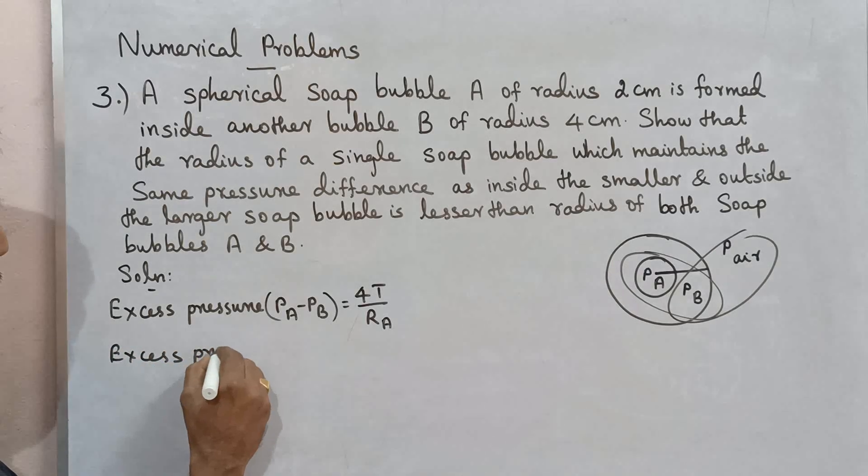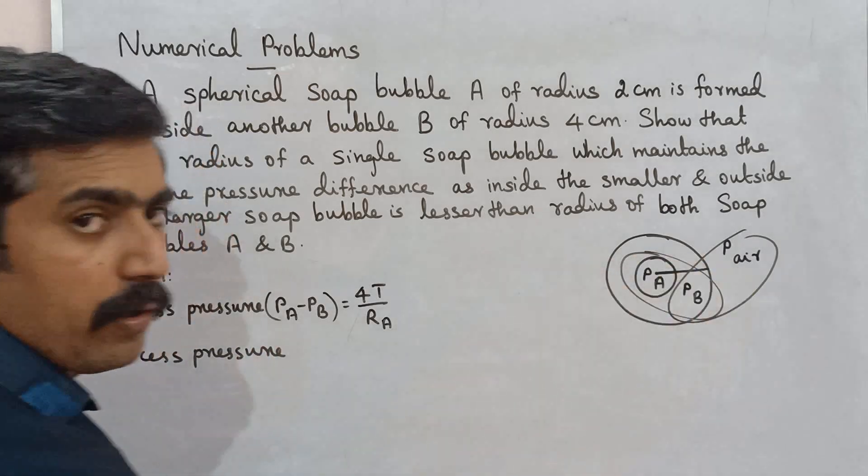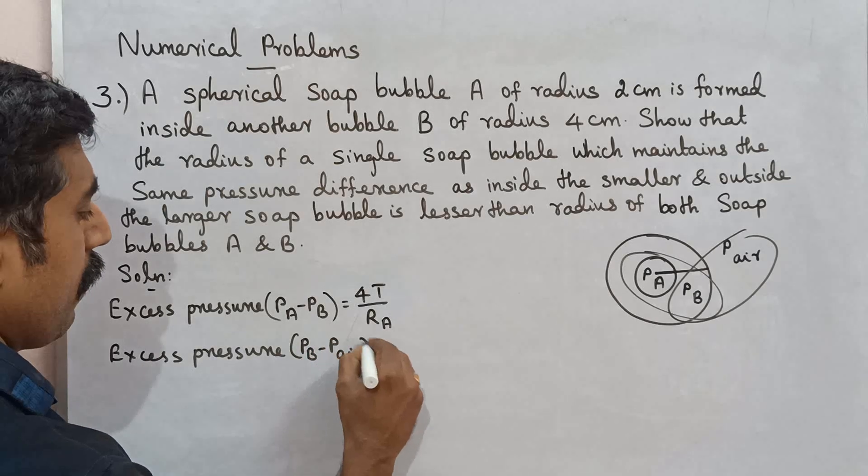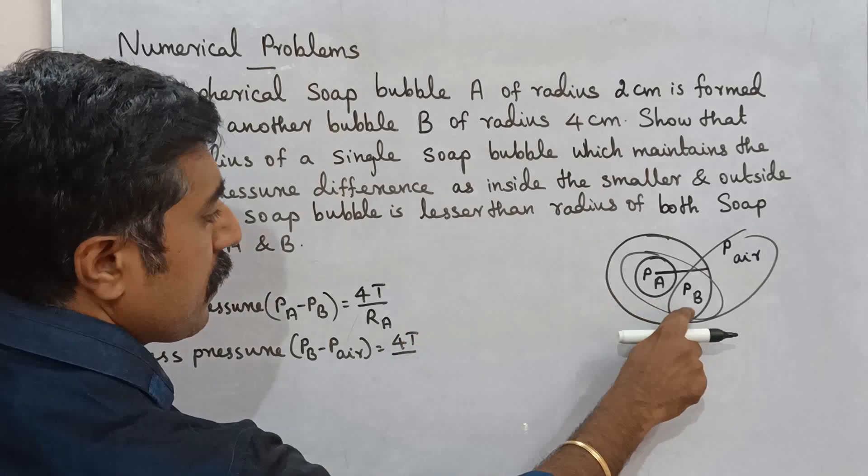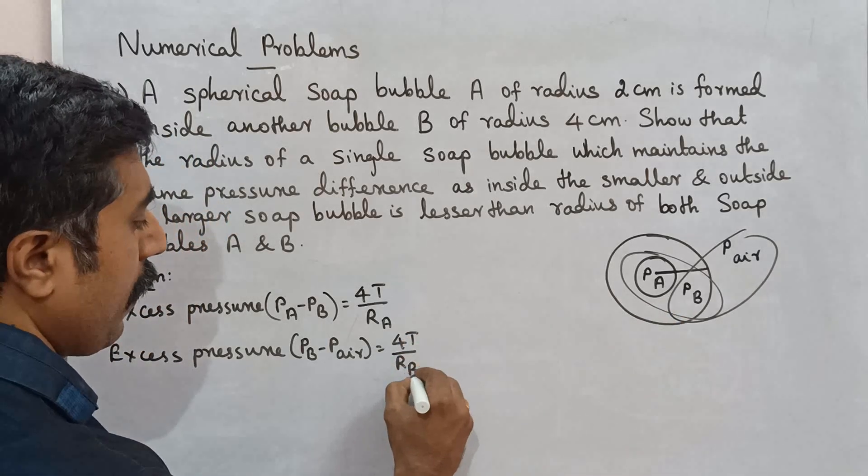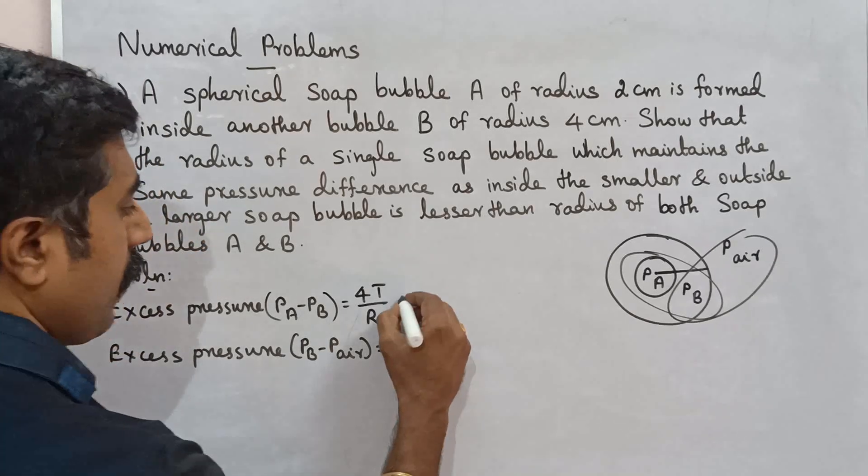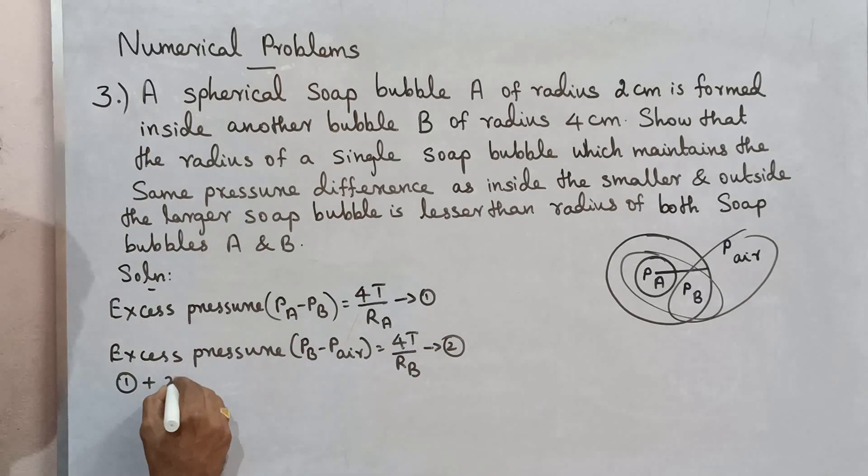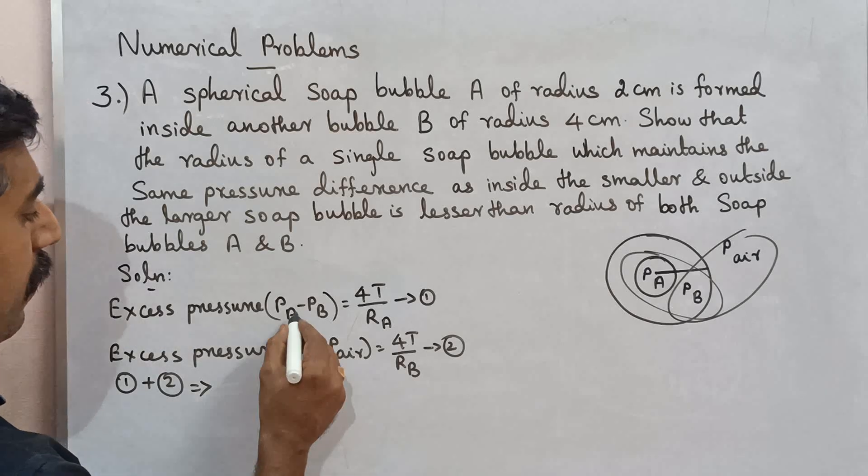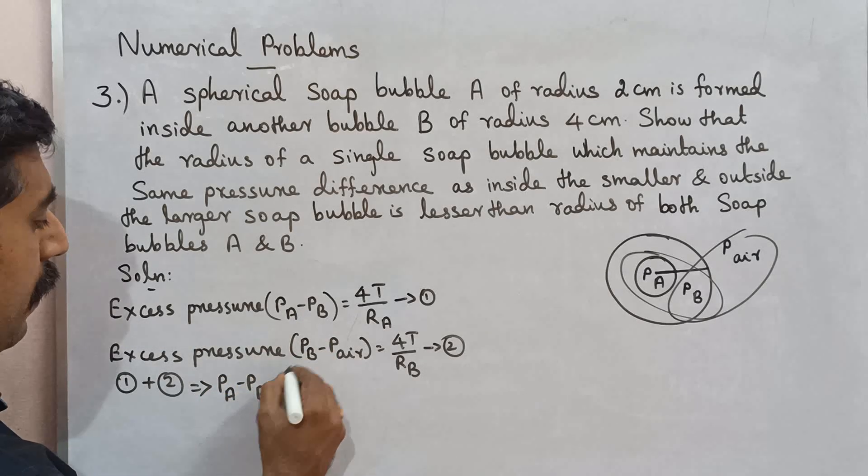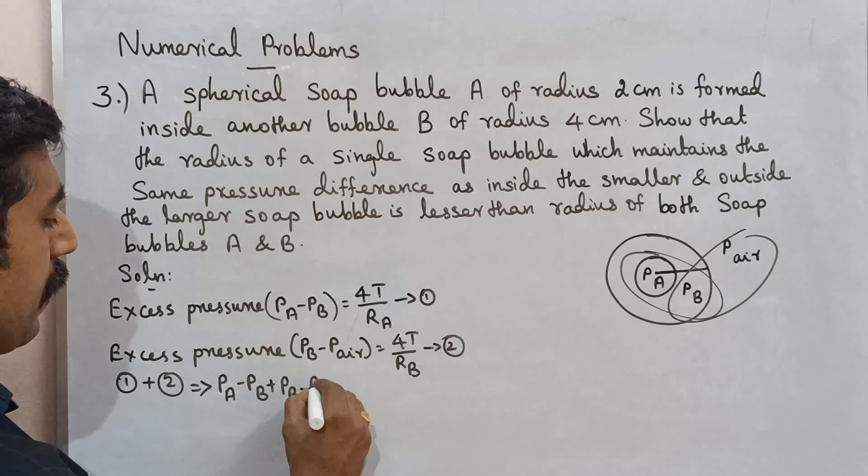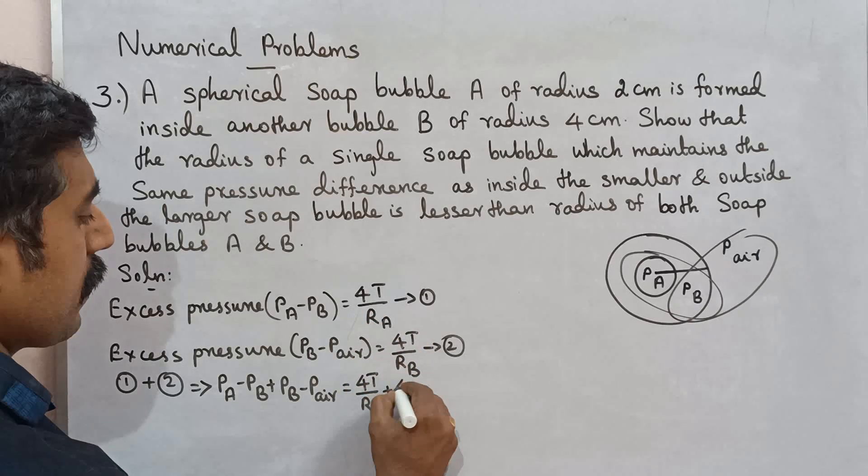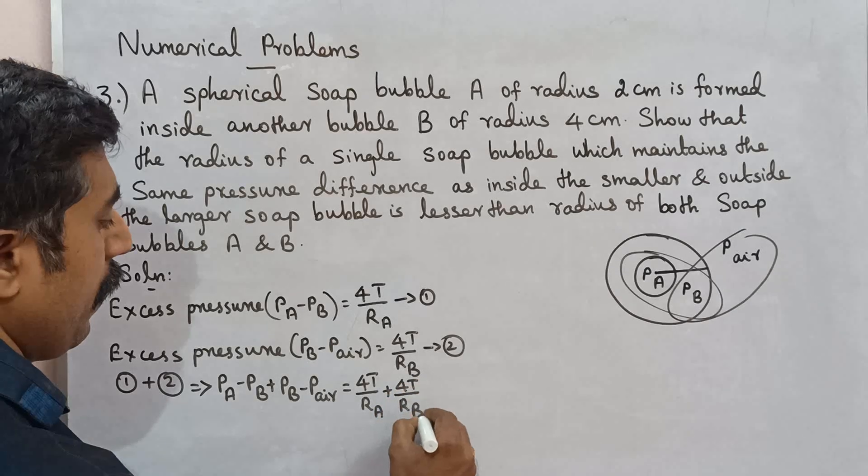Excess pressure equation: Pa minus Po equals 4T over Ra, and Pb minus Po equals 4T over Rb. Which implies Pa minus Pb equals 4T over Ra plus 4T over Rb.